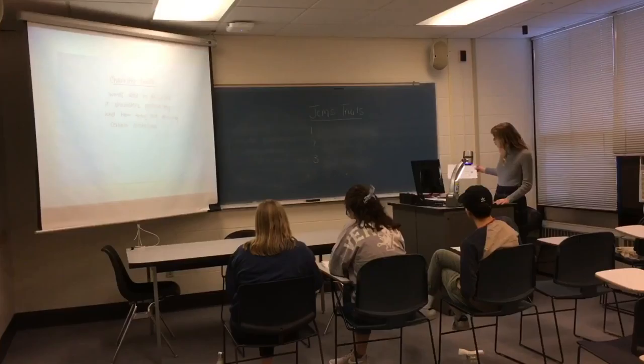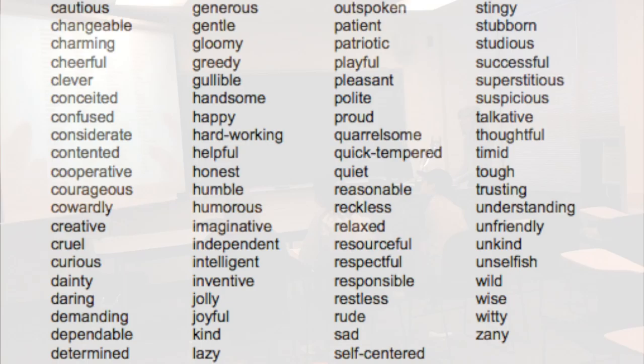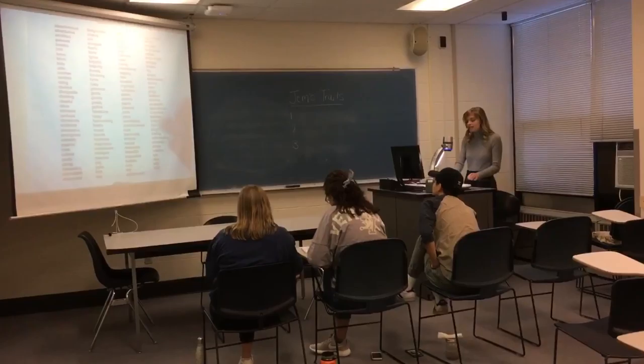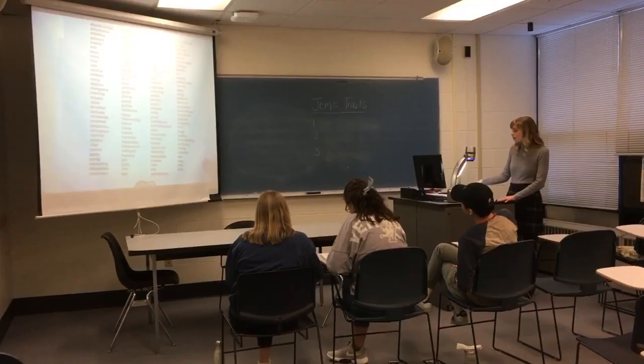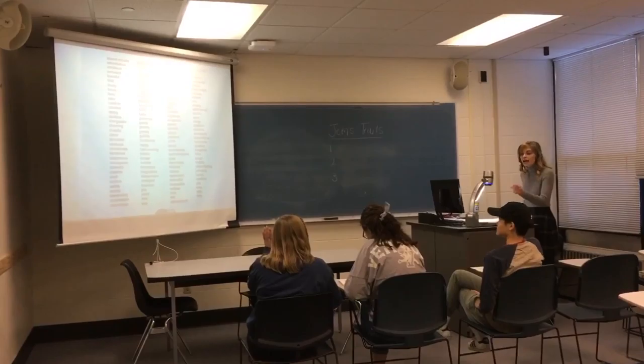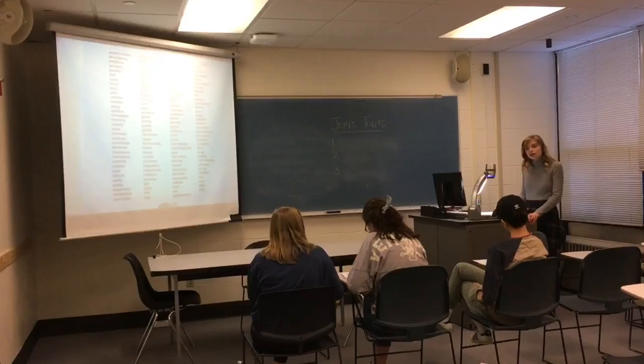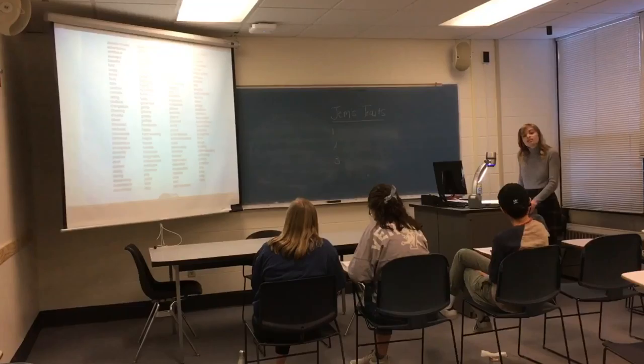So today we're going to look at this list of character traits, and then we're going to read a short paragraph from the book To Kill a Mockingbird, and we're going to try and identify these character traits in the passage. Before we get started, are there any words on this list that you don't understand or haven't heard before? Adriana? Sharp-witted? Sharp-witted means clever, or someone who's very smart.